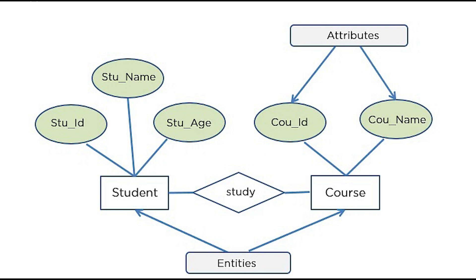Entity is literally in the model name and it is simply a thing or being, like a wine or a person. Entity type is a term used to define a collection of entities with similar characteristics, like people. For example, people is an entity type and the entities within it can be Bob, Sally, and Joe.